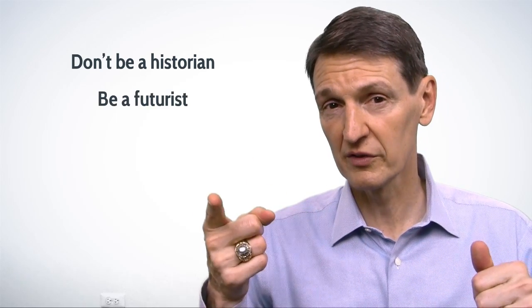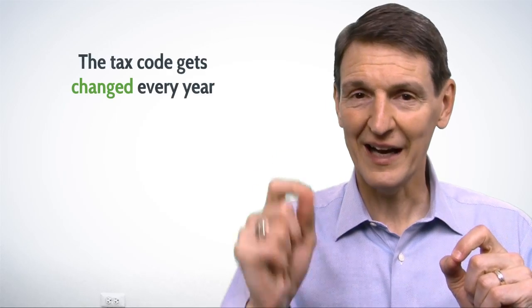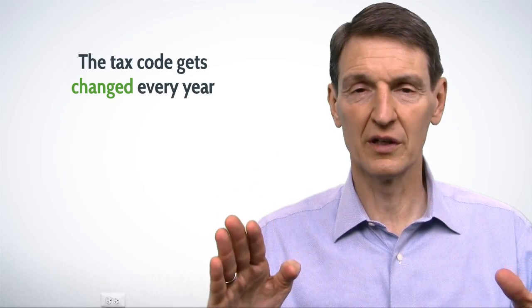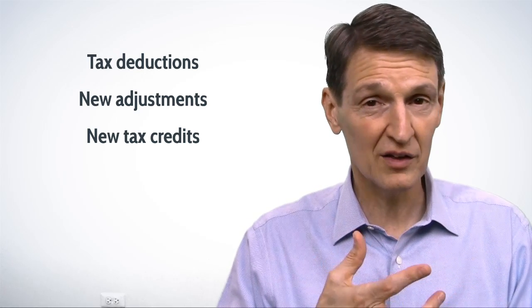We probably want to be a futurist. So as a futurist what you do is you do some annual tax planning every year typically in the first quarter of the year. Now the tax code gets changed every single year and so there's something that will probably have an advantage to you and it does fall in those same arenas of tax deductions, new adjustments, new tax credits and other areas that you specifically could take advantage of.